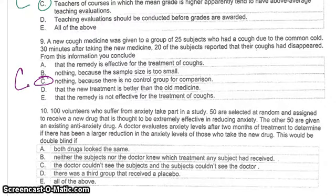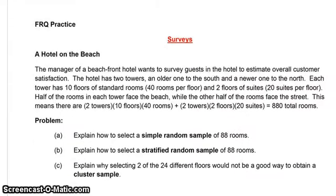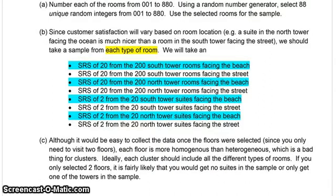Number ten: read carefully, apply the definition, and the answer is B. Now for some FRQ practice. Here are the answers according to the book: A, B, and C for the surveying FRQ. Notice — for surveying, we talk about how we choose up front. You can pause and read.